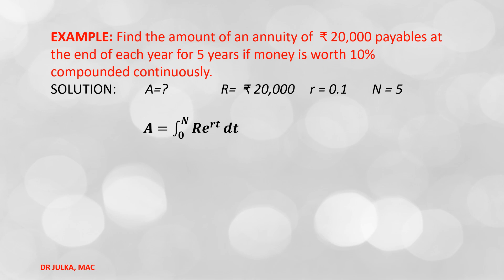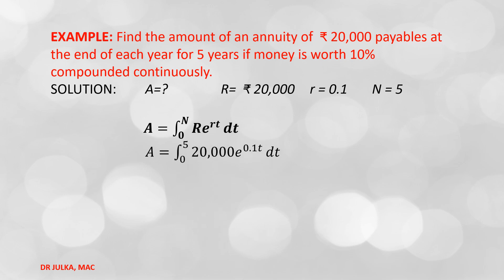If interest is compounded continuously, then the future value equals the integration of R · e^(rt) with respect to dt, with limit 0 to n. Putting R = 20,000, r = 0.1, and n = 5 and integrating: the integration of e^(0.1t) is e^(0.1t) / 0.1.